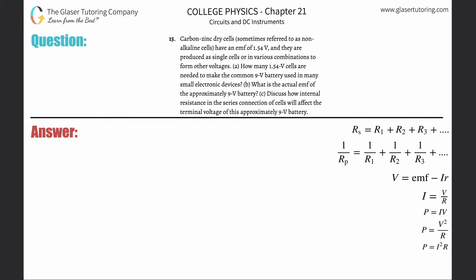Number 15, carbon-zinc dry cells, sometimes referred to as non-alkaline cells, have an EMF of 1.54 volts and they're producing single cells and variation. Letter A: How many 1.5 volt cells are needed to make the common 9 volt battery used in many small electronic devices?